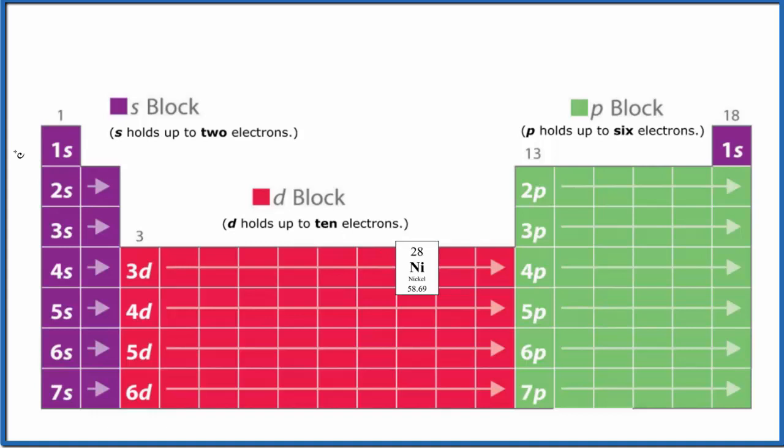So we start out and we're in the first energy level 1s. We have 1s1, 1s2. And then that's full. So we go to the second energy level, 2s1, 2s2. Then over to p, 2p, 1, 2, 3, 4, 5, 6. p can hold up to 6.